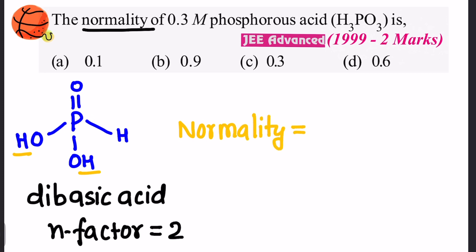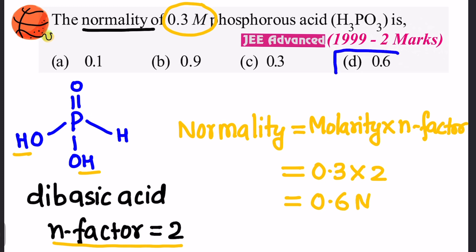Now molarity is given to us as 0.3, so it is 0.3 into valency factor or n-factor which is 2, so it will be 0.6 normal. And if you see, the correct answer should be D. Thank you.